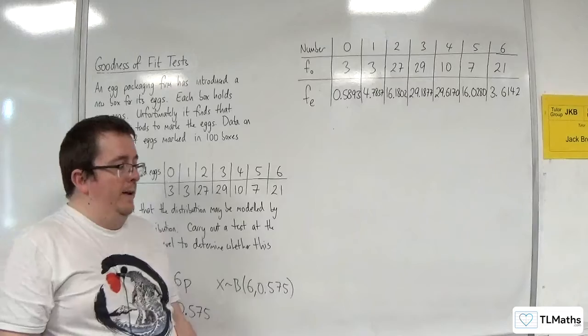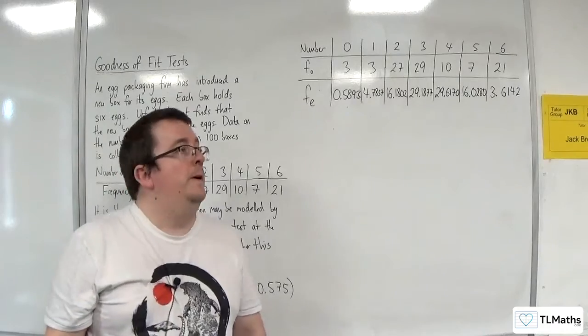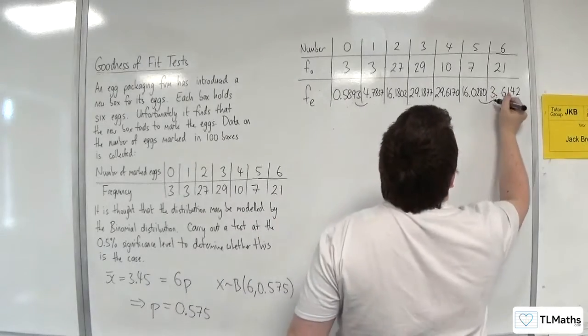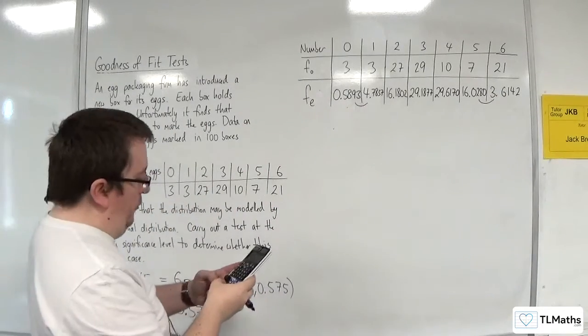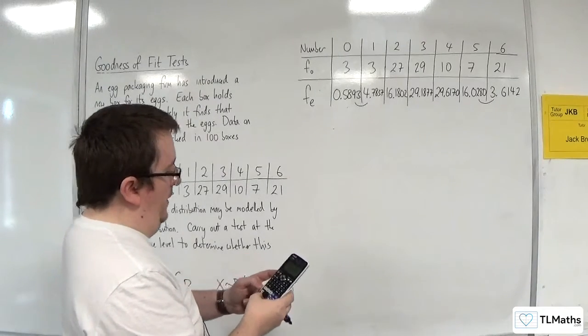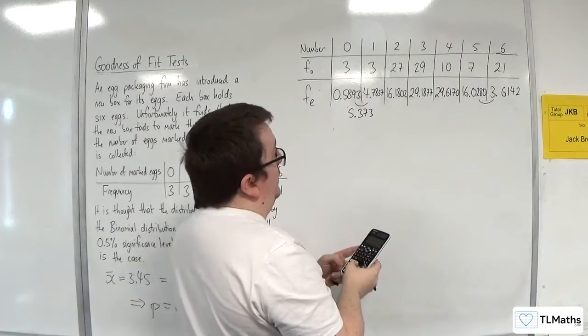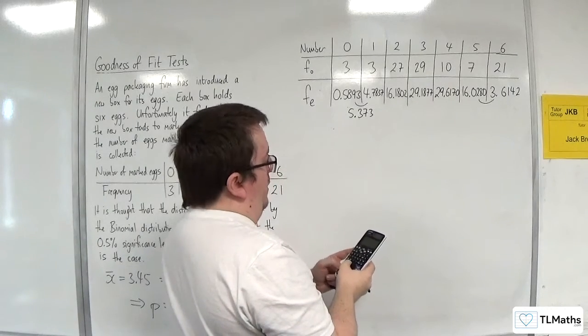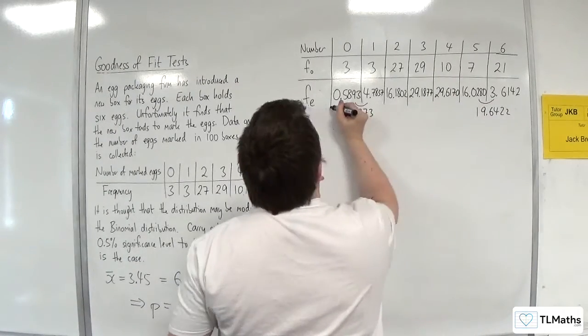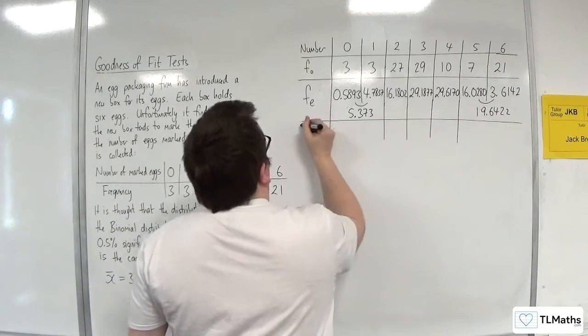Problems are that we've got 3 expected values up there that are less than 5. So it makes sense to combine those two together and those two together. That will get me expected values greater than 5. 0.5893 plus 4.7837, so 5.373. And 16.0280 plus 3.6142, so 19.6422.